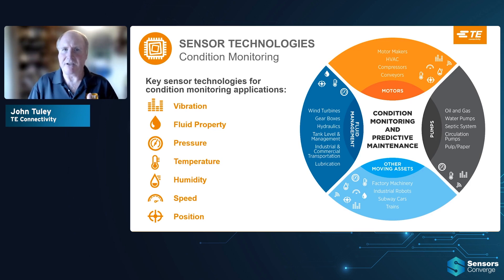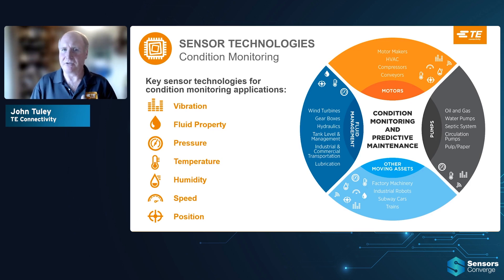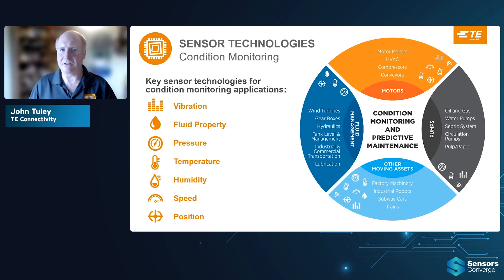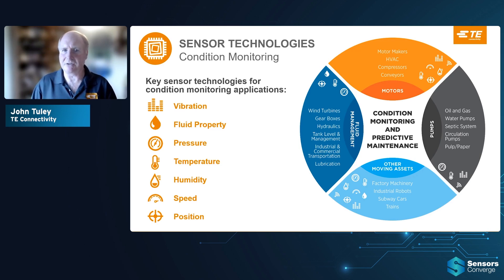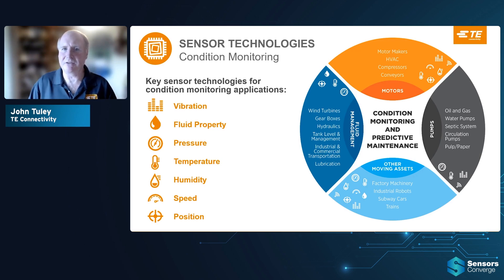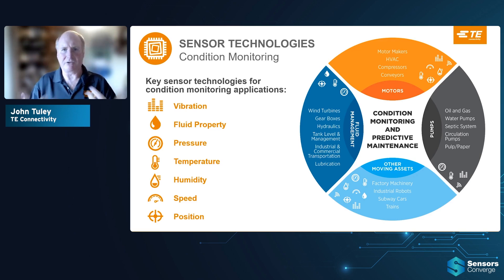Fluid property is a great sensor technology that will actually tell you when your fluids are getting bad. Typically they're done on a time-based schedule — after three months you change the oil in your car. But now there are fluid sensors that can say, instead of waiting three months, the fluid may still be good, so you can actually extend the life of the fluids. That's better for the environment and lower cost for your operations.